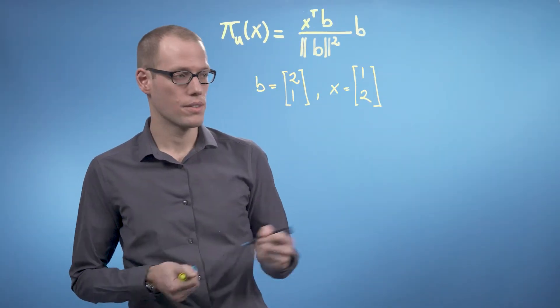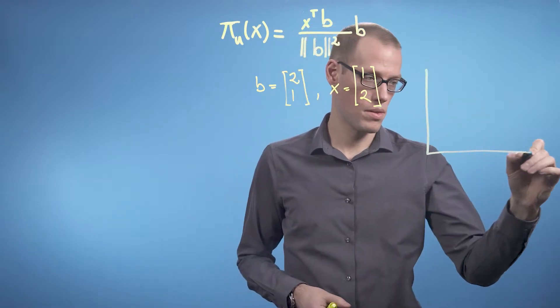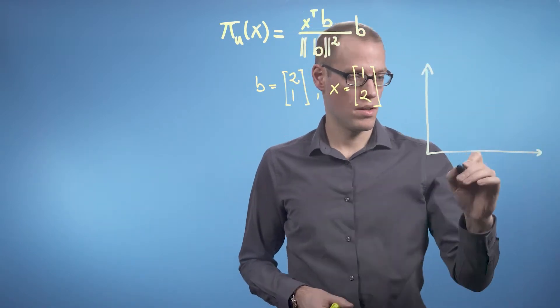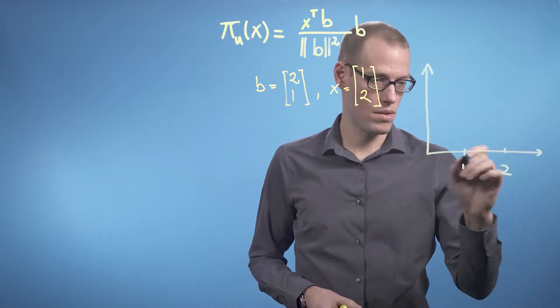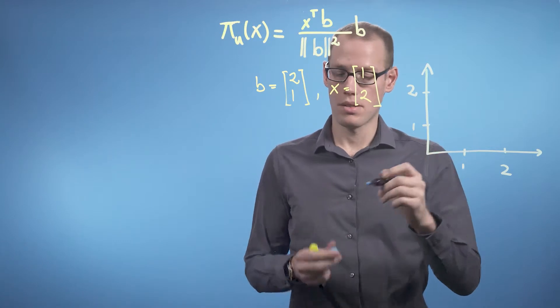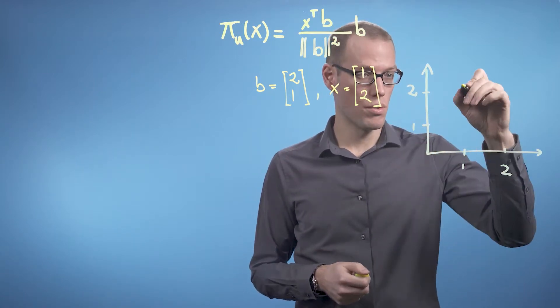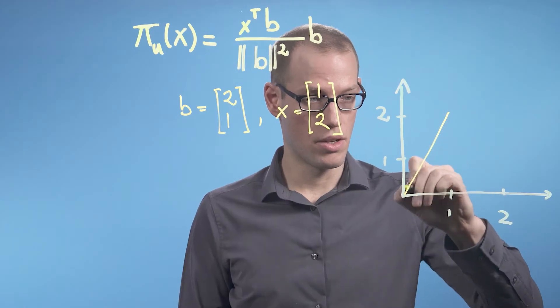Let's quickly draw this. So, x is the vector [1,2], so x is living over here.